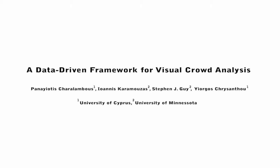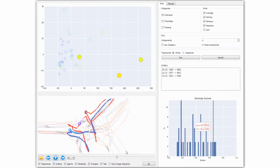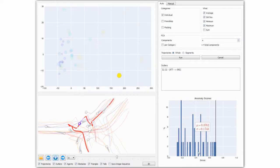We present a data-driven framework for visual crowd analysis. Our framework takes as input reference data of nominal crowd behavior along with simulation trajectories to be evaluated. We use automated anomaly detection techniques to find inconsistent or erroneous behaviors and highlight the outliers using a heat map representation of trajectories. We implement our framework using Python, creating a tool which can help automate the process of analyzing large simulations.